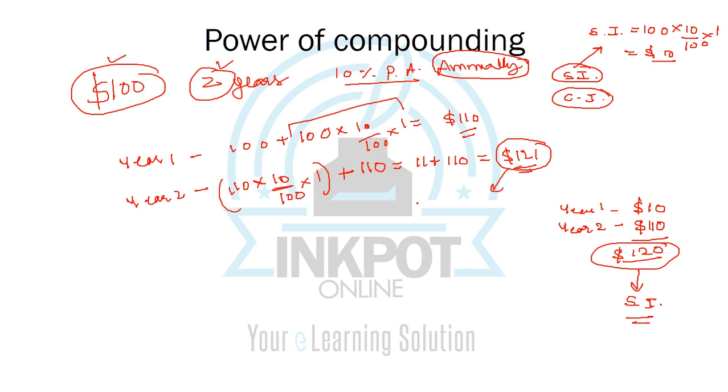So this is the amount you get if the interest is compounded annually. You see that by simple interest method after two years you have $120, but by compound interest method you'll have $121. There's a difference of $1, so compound interest gives you $1 extra. This is the power of compounding. If I keep increasing my years, say to 10 years, the difference will be much higher.